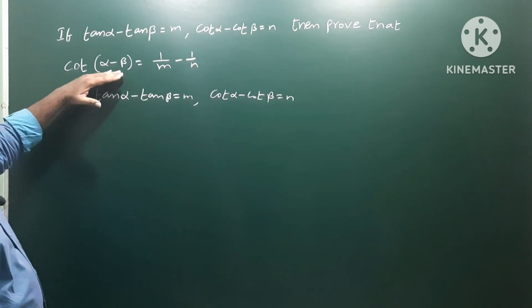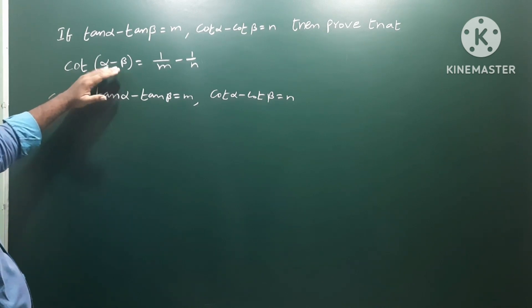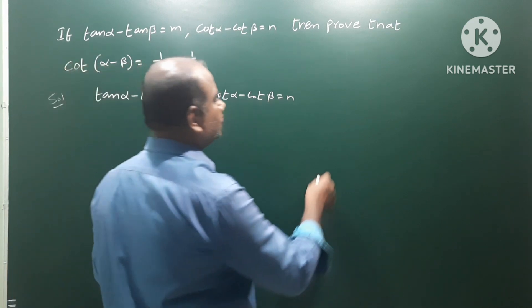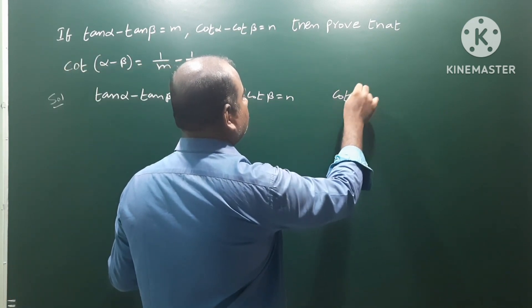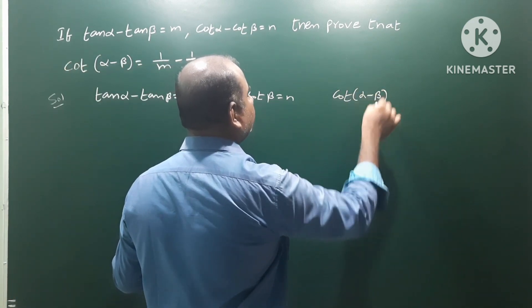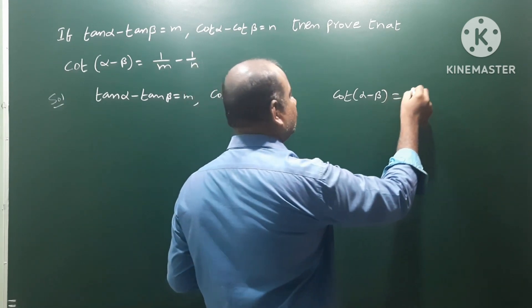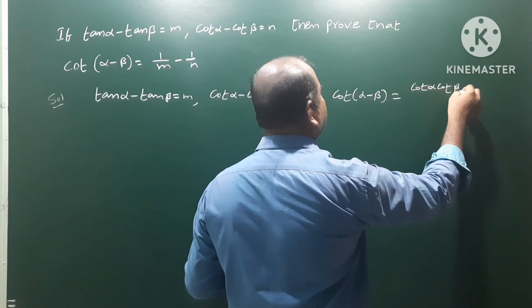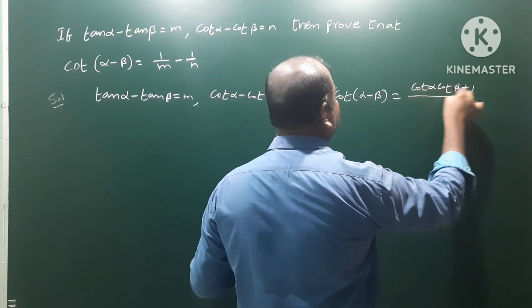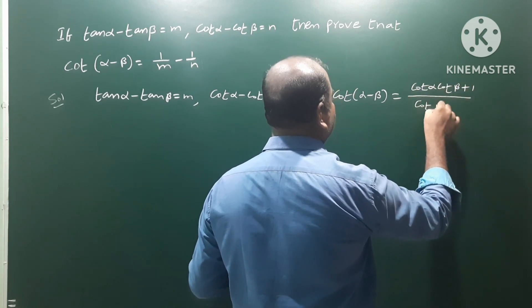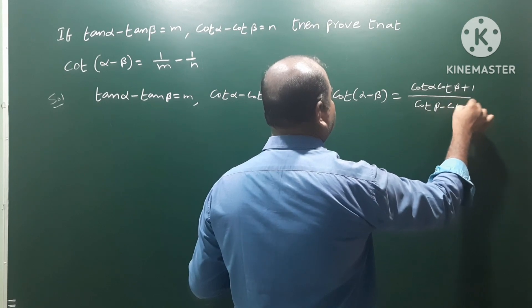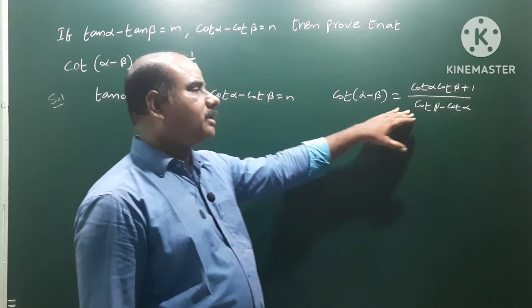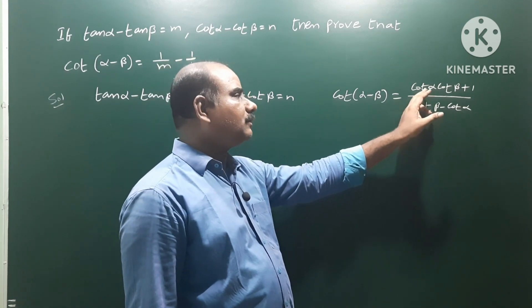Calculate cot alpha minus beta using the formula: cot(alpha minus beta) is equal to cot alpha cot beta plus 1, divided by cot beta minus cot alpha.